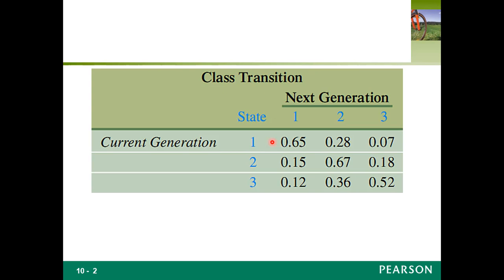We use the symbol P_ij where i is the row — the initial state — and j is the column — the state you're transitioning to. So P_ij is the probability of going from state i to state j, where i is your current state. For example, P_11 is the probability of going from state one to state one from one generation to the next, which is 0.65. And P_32 would be the probability of going from state three to state two.